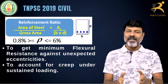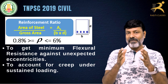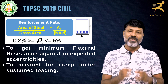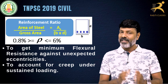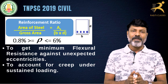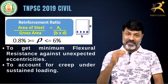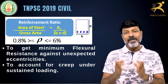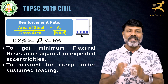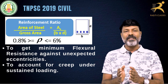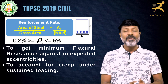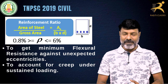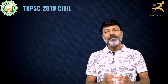A column is always under some flexure. To provide flexure resistance, we need a minimum reinforcement ratio. Also, under sustained loading — that is, continuous load — a common problem is creep. To counteract creep, we need to use the minimum reinforcement.